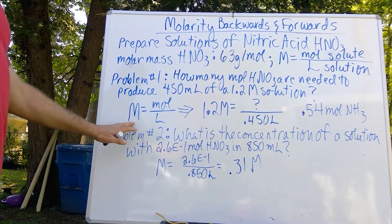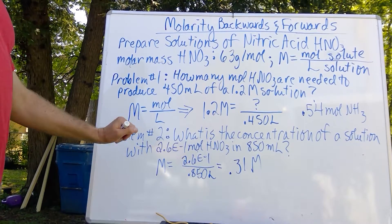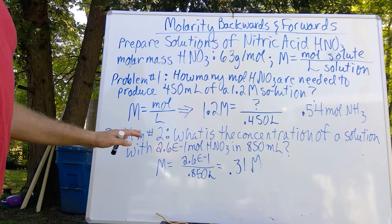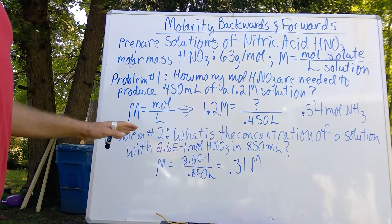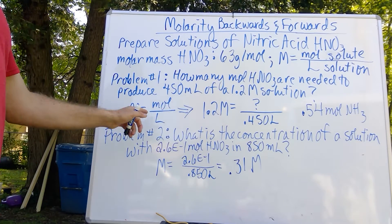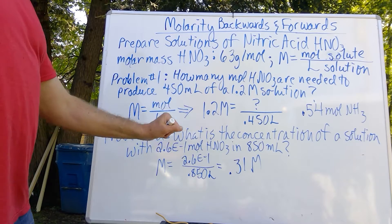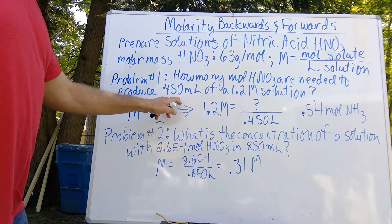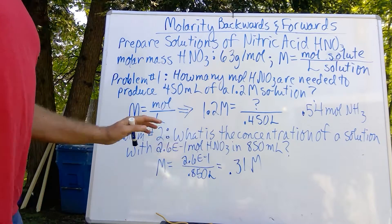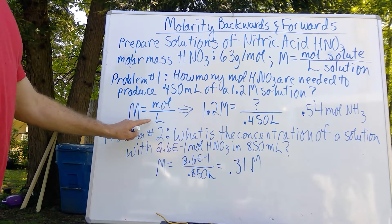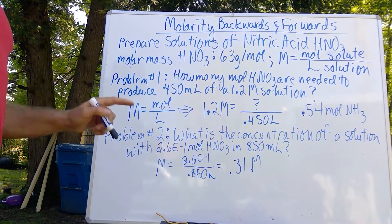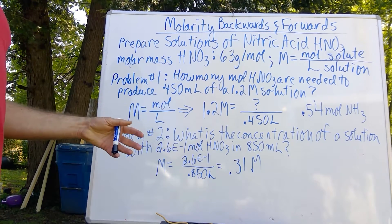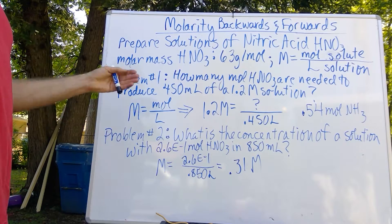So once again, molarity is moles over liters. Most of the time in general lab chemistry, when someone says a solution concentration, they mean molarity. So we simply plug in our values here, we have our molarity, that's given in the problem, and notice that I have converted milliliters to liters. This is a moles per liter solution. If it is not in liters, it has to be put into liters for it to be viewed in terms of molarity.